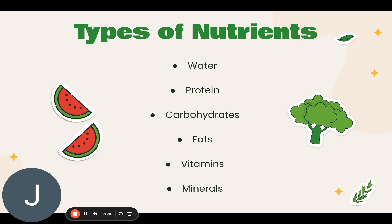Fats produce energy, add flavor, and help the body use certain vitamins. Vitamins A, D, E, and K are the fat-soluble vitamins, meaning they're only dissolved in fats. Unneeded dietary fat is stored in the body as adipose tissue. Healthy fats include salmon, avocados, and olive oil. Unhealthy fats usually come from animal sources or are processed foods made from vegetable oils. Solid fats are solid at room temperature — butter, margarine, or shortening. Oils are liquid fats that can come from plants and fish. Oils are not a food group.